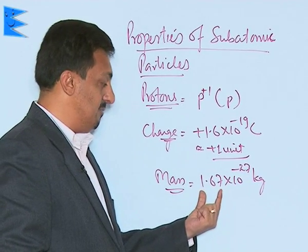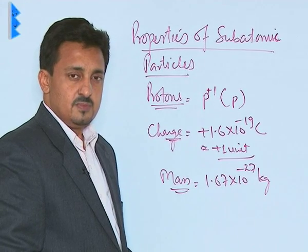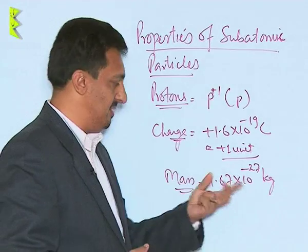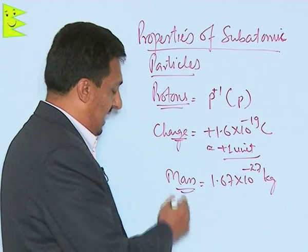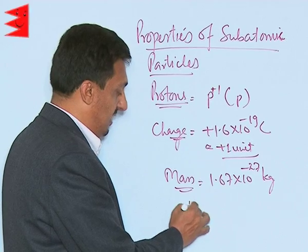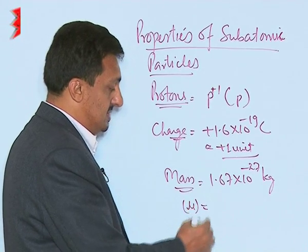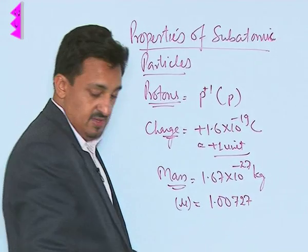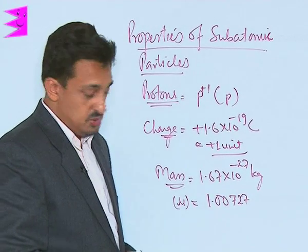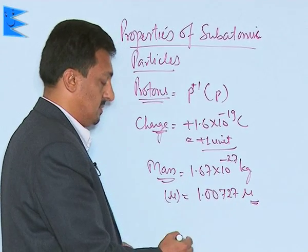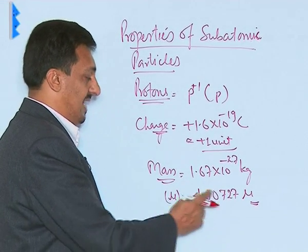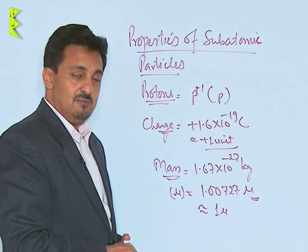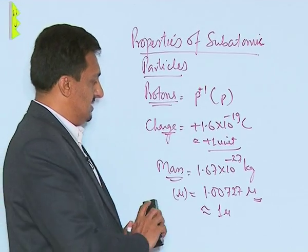As per NCERT, the proton mass is exactly 1.67 × 10⁻²⁷ kg. Many times it is taken as 1.66, but as per NCERT it is 1.67. In terms of unified mass, it is 1.00727 unified mass units, which is approximately taken as 1 unified mass unit.